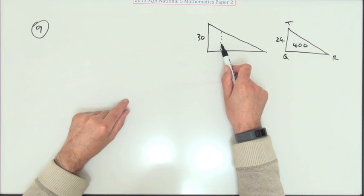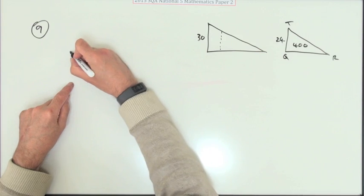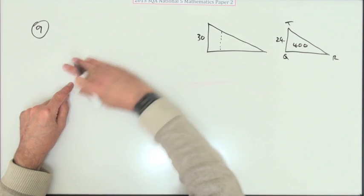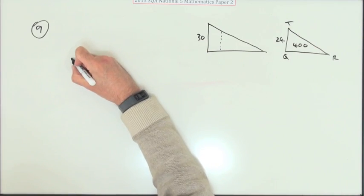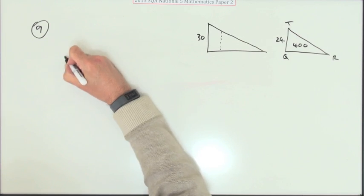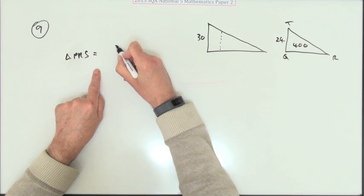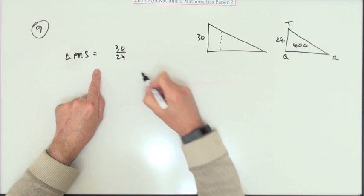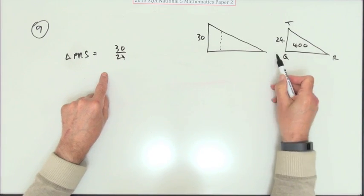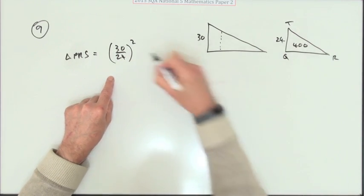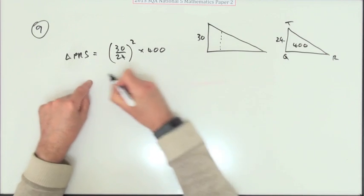So the area of the big one, which I could call triangle PRS, is going to be—now it's 30 over 24 times the size linearly, so its area will be that squared times that area, times 400.